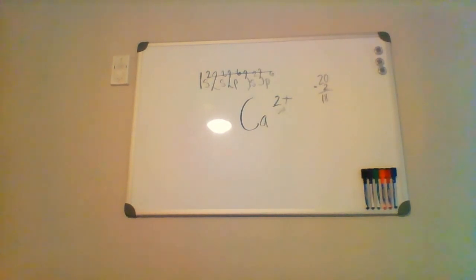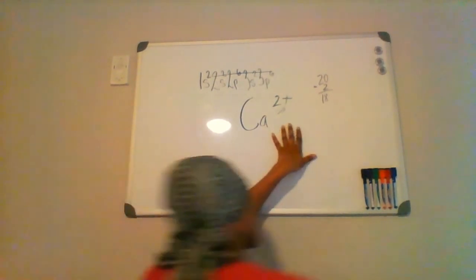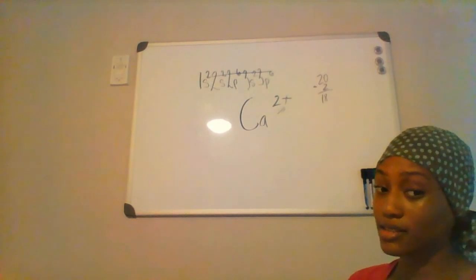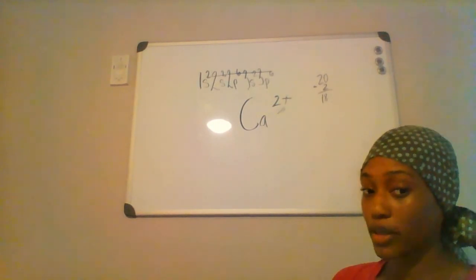So whenever you have ions and you're asked to write their electron configurations, usually they'll have an electron configuration that's the same as a noble gas element.